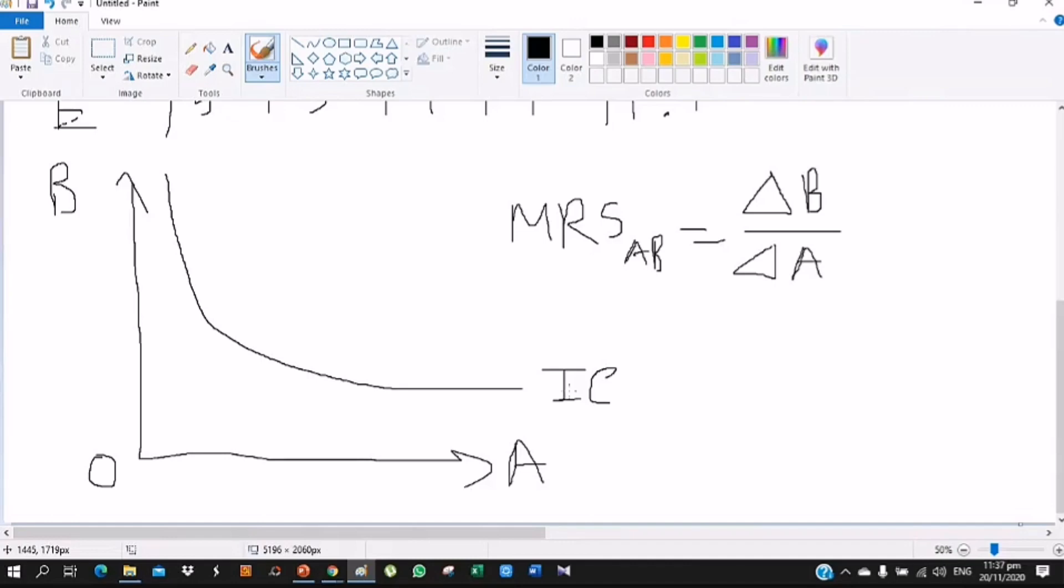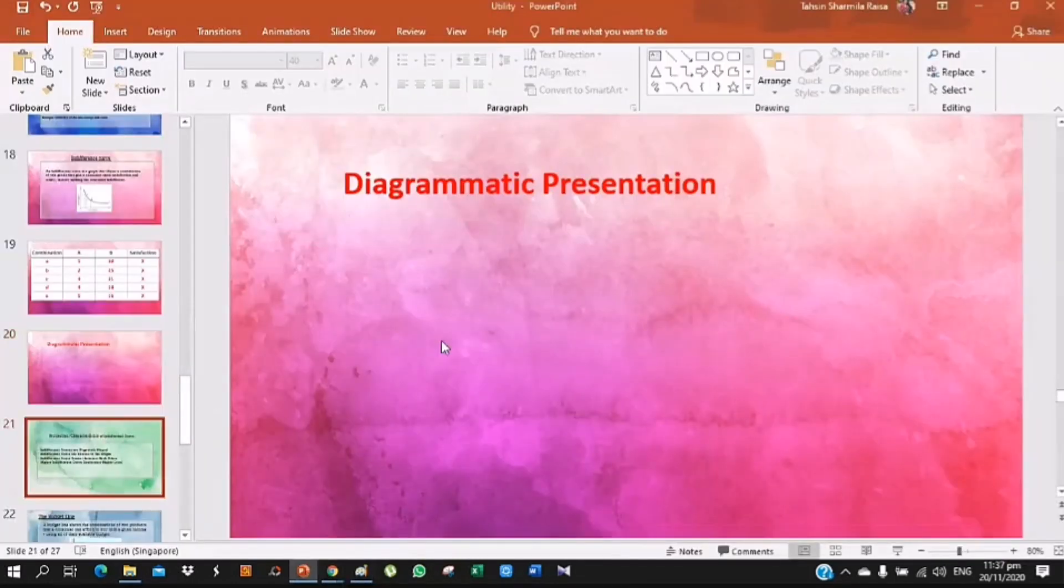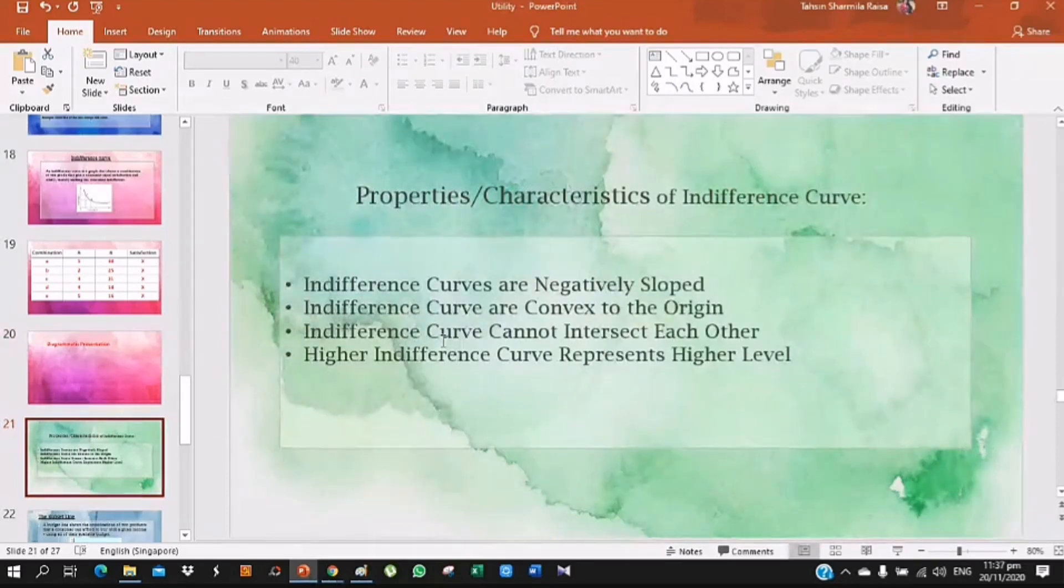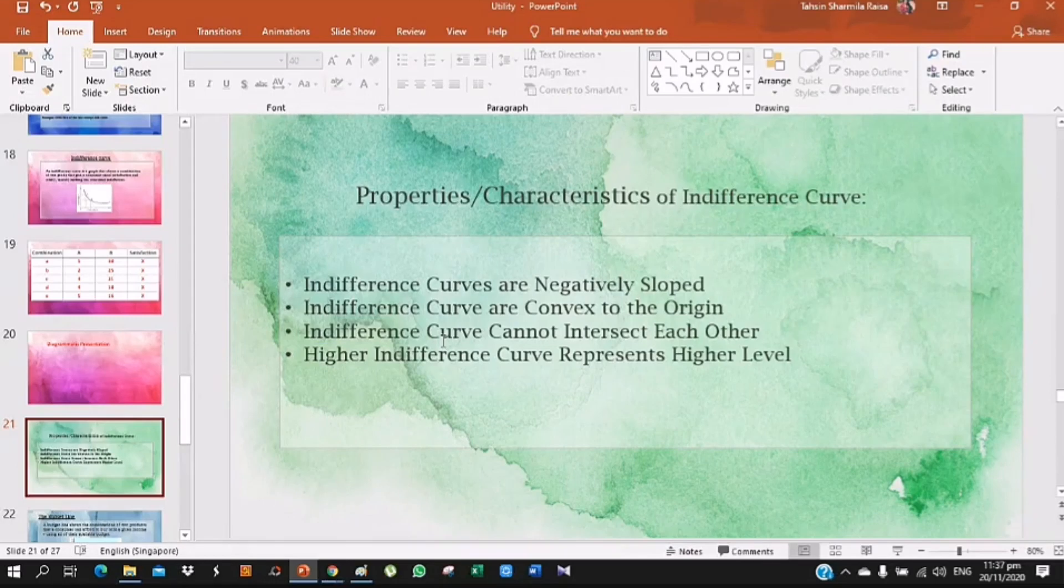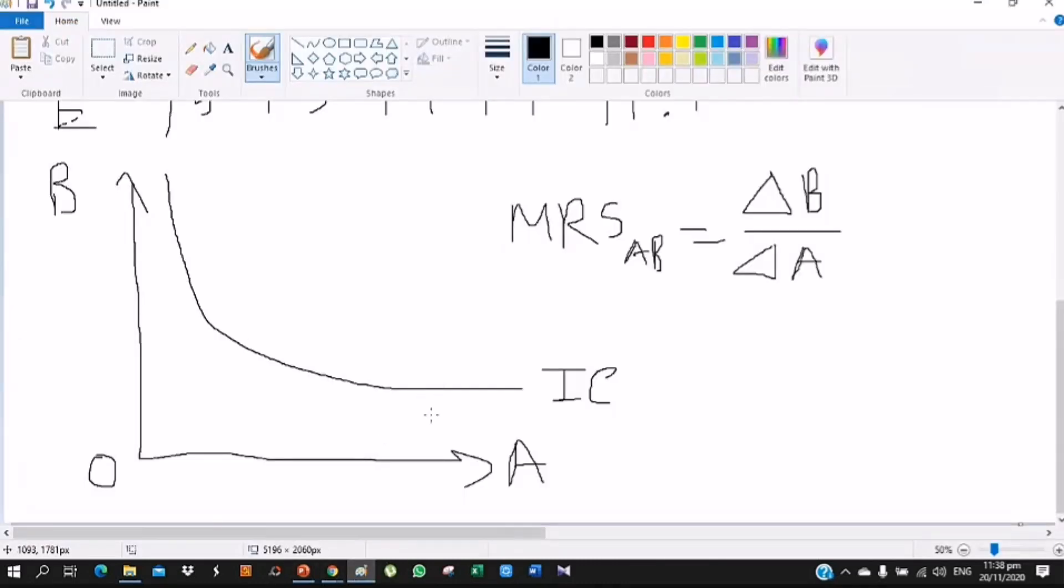Now we see properties of indifference curve. First, the indifference curve is negatively sloped, meaning the indifference curve slopes downward from left to right. It's negatively sloped - when one good's consumption increases, the other decreases.